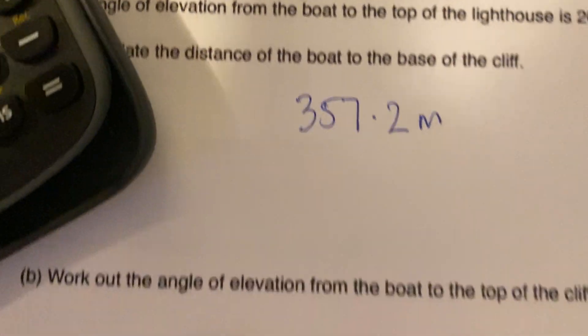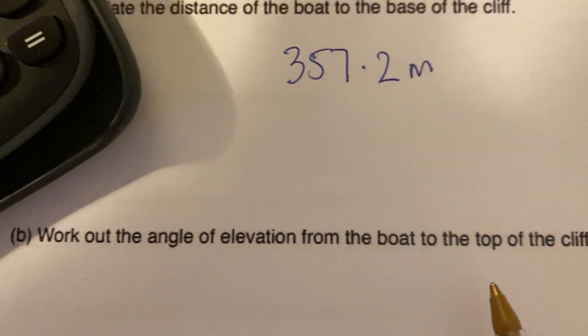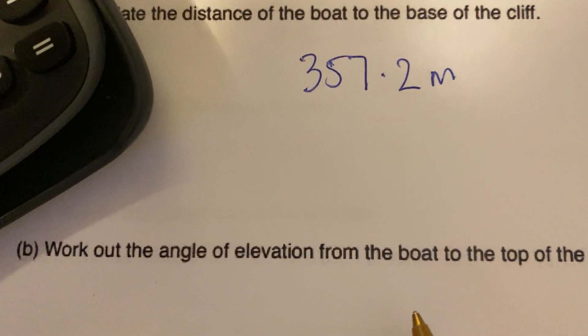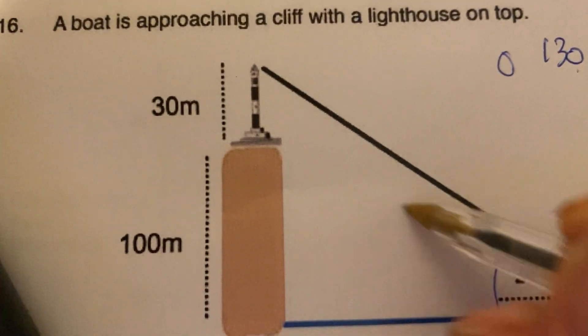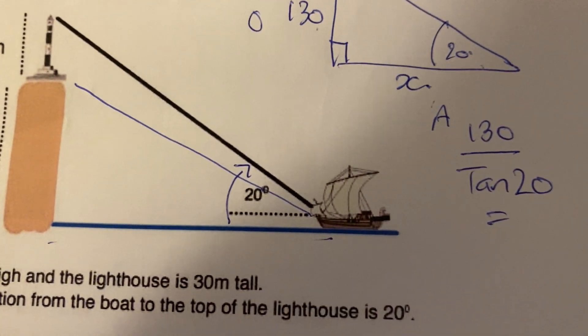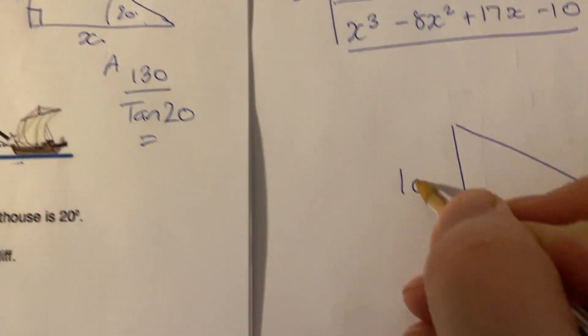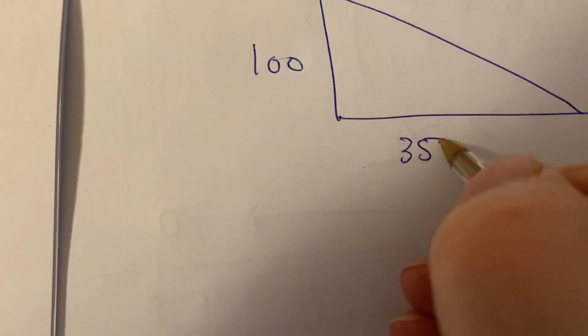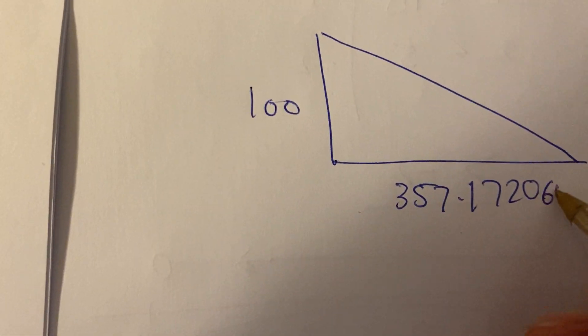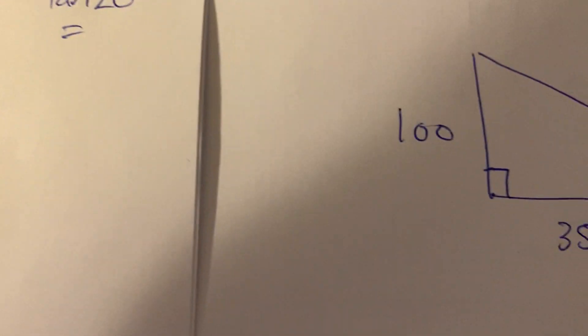And then it says work out the angle of elevation from the boat to the top of the cliff. Okay, so I'm going to go from there to there now. Again, draw out what you know. I'm going to draw my triangle. I now know that's 100, and this is 357.17... I haven't cleared it on here, which is cool. I need this angle here now. I know it's going to be less than 20 because 20 went higher up. So how do I work that out?